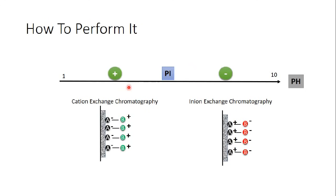In this case we should apply anion exchange chromatography, because our protein of interest will be negatively charged. The rule of thumb is: when the pH is higher than the pI, the protein is negatively charged; when the pH is lower than the pI, the protein is positively charged.